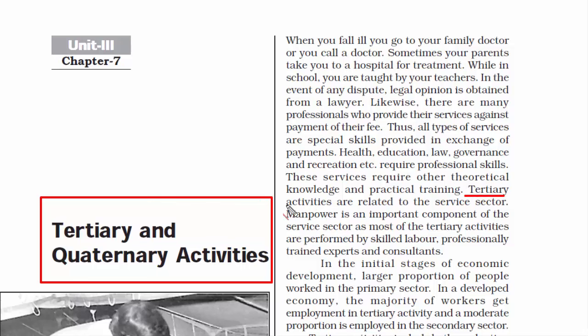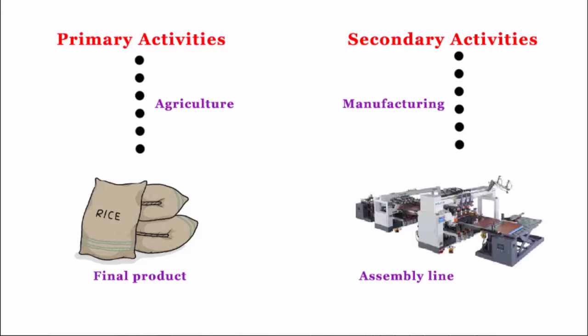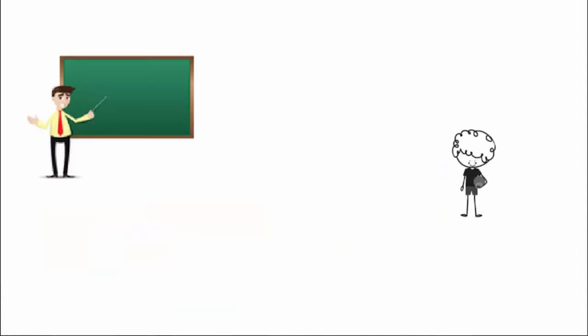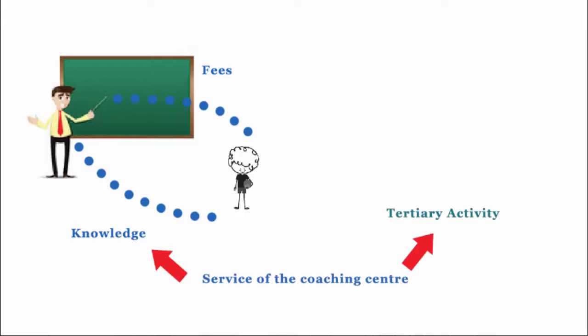Tertiary activities are related to the service sector. In primary and secondary activities, there is a product that is created and then goes through a development phase before going into the market. In tertiary, you have services rather than a product. For example, you go to tuition and pay fees in return for knowledge. The knowledge you are getting is the service of that coaching center, and that makes it a tertiary activity.